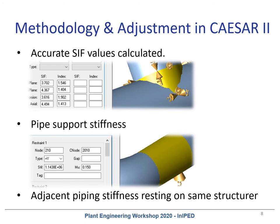The second refinement was pipe support flexibility. Pipe support stiffness is another crucial element that plays an important role in generating realistic reactions. The structural team can help provide this data to the piping stress engineer to incorporate in the CAESAR 2 model. There are other ways to obtain this data as well, which we can discuss in another forum.